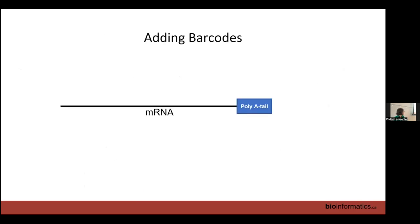To capture mRNA, we use a poly-dT sequence that hybridizes to the poly-A tail. To this we add barcodes to record exactly where this mRNA molecule came from. First, we add the unique molecular identifier — the UMI.